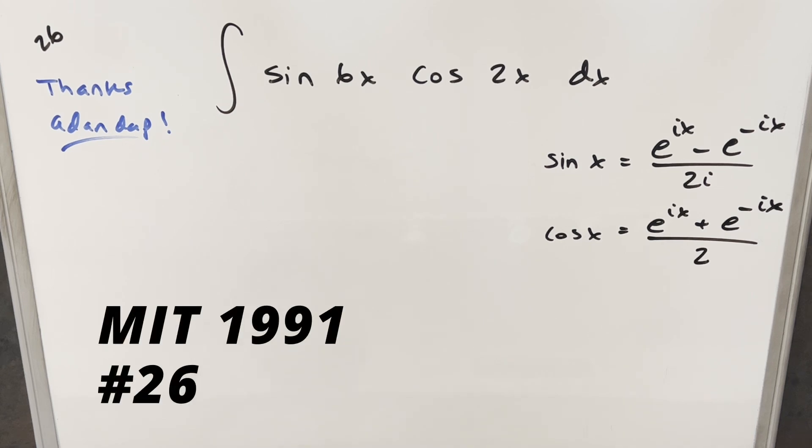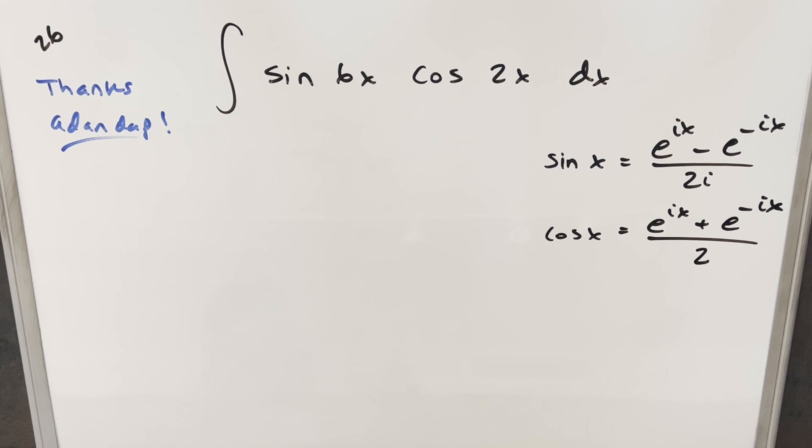Okay, we have here another alternative method video. This one's from the MIT integration B, 1991, problem 26. We have the integral of sine 6x cosine 2x dx. I've already done this problem once using the angle difference formula, and what I want to do today is use a different method. It's suggested by Dan Dept that we do this using the complex definition for sine and cosine.